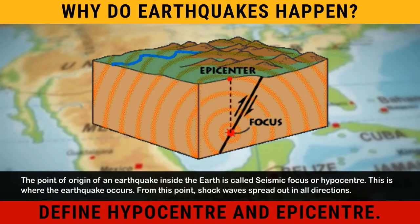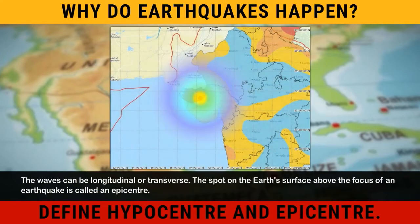The point of origin of an earthquake inside the Earth is called seismic focus or hypocenter. This is where the earthquake occurs. From this point, shock waves spread out in all directions. The waves can be longitudinal or transverse.